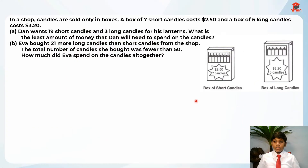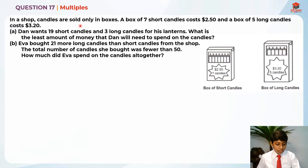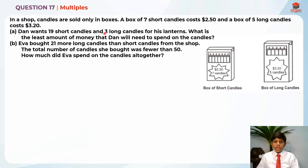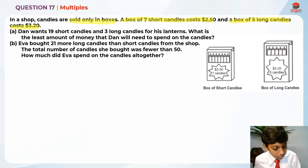This question is testing us on multiples and it's a pretty tough question. Let's read it first: in a shop, candles are sold only in boxes. A box of seven short candles costs $2.50 and a box of five long candles costs $3.20. Dan wants 19 short candles and three long candles for his lanterns. What is the least amount of money that Dan will need to spend on the candles?